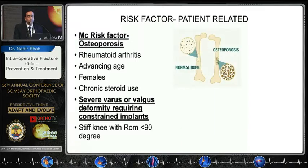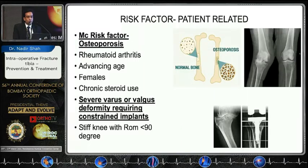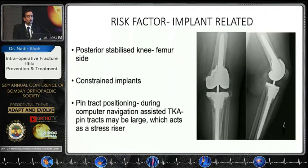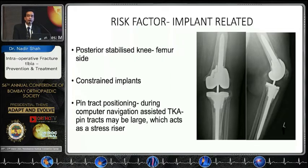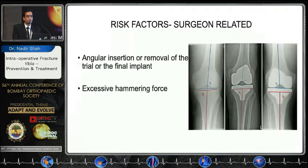A stiff knee with range of motion less than 90 degrees is also a predisposing factor. Implant-related risk factors include posterior-stabilized knee designs for the femur and constrained implants. Pin track positioning during computer-navigated total knee arthroplasty can create larger defects that act as stress risers. Surgical risk factors include angular insertion or removal of trial or final implants and excessive hammering force.